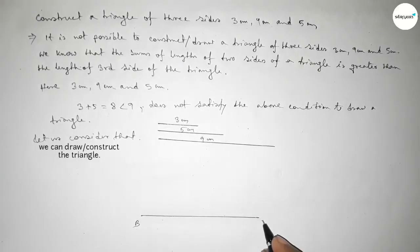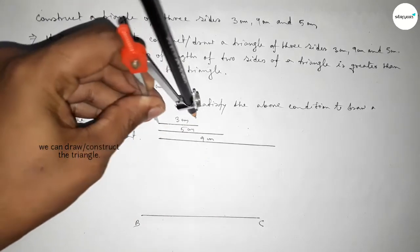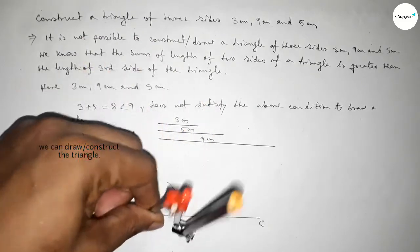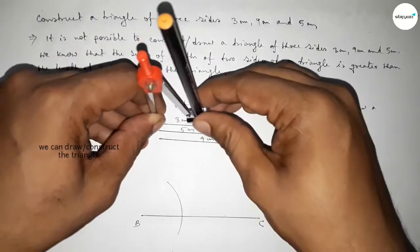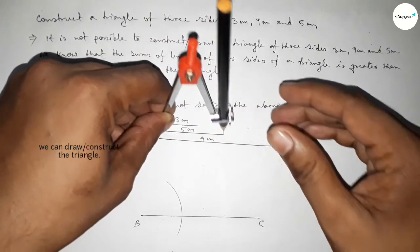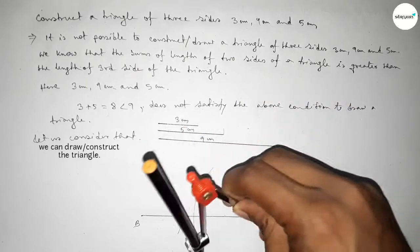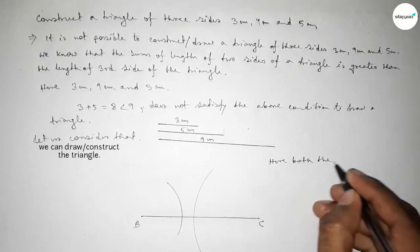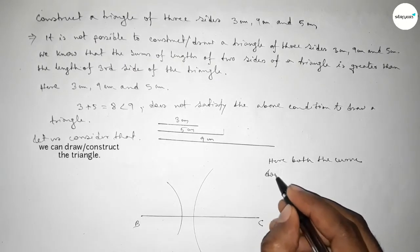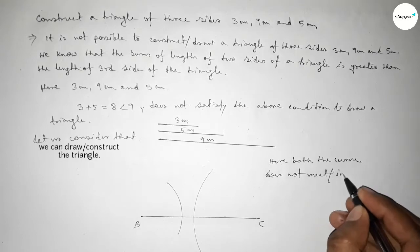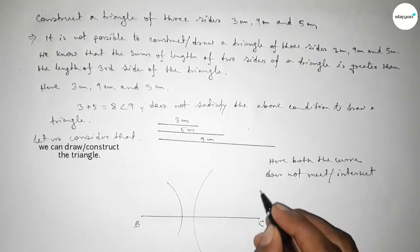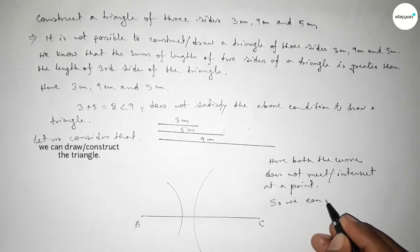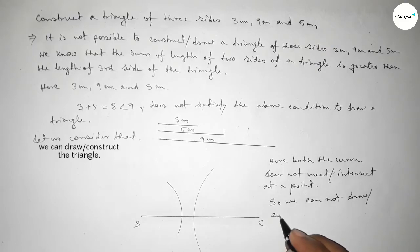Taking point B and point C. First taking the length 3 centimeter by using compass and drawing an arc. Then taking the length 5 centimeter by using compass, putting the compass on point C and drawing an arc. We can see that both curves do not meet or intersect at a point.